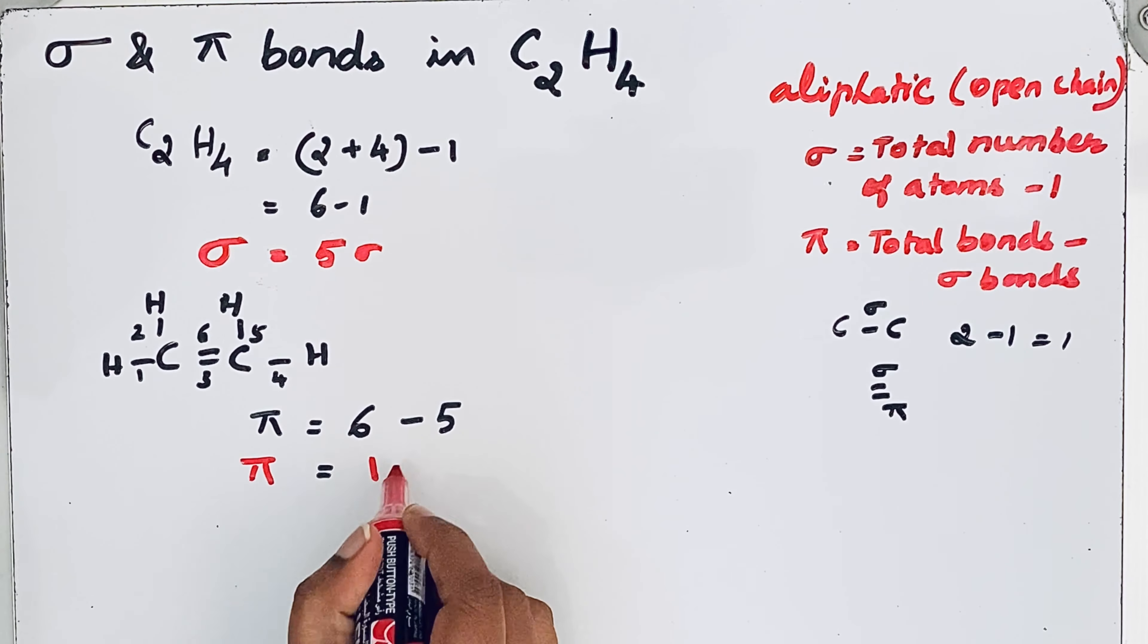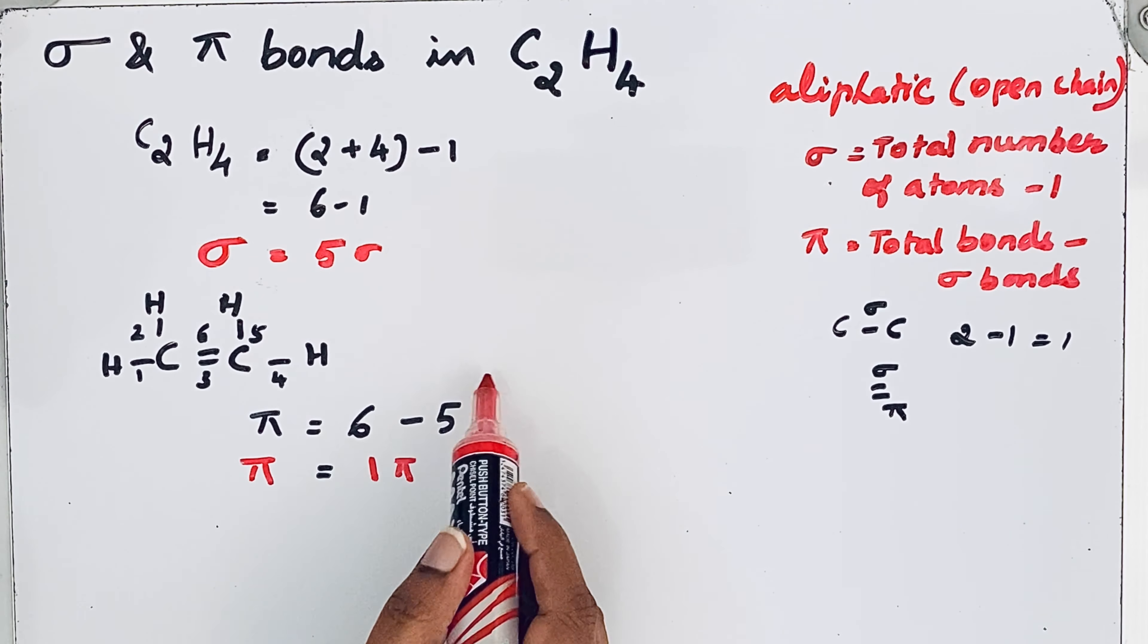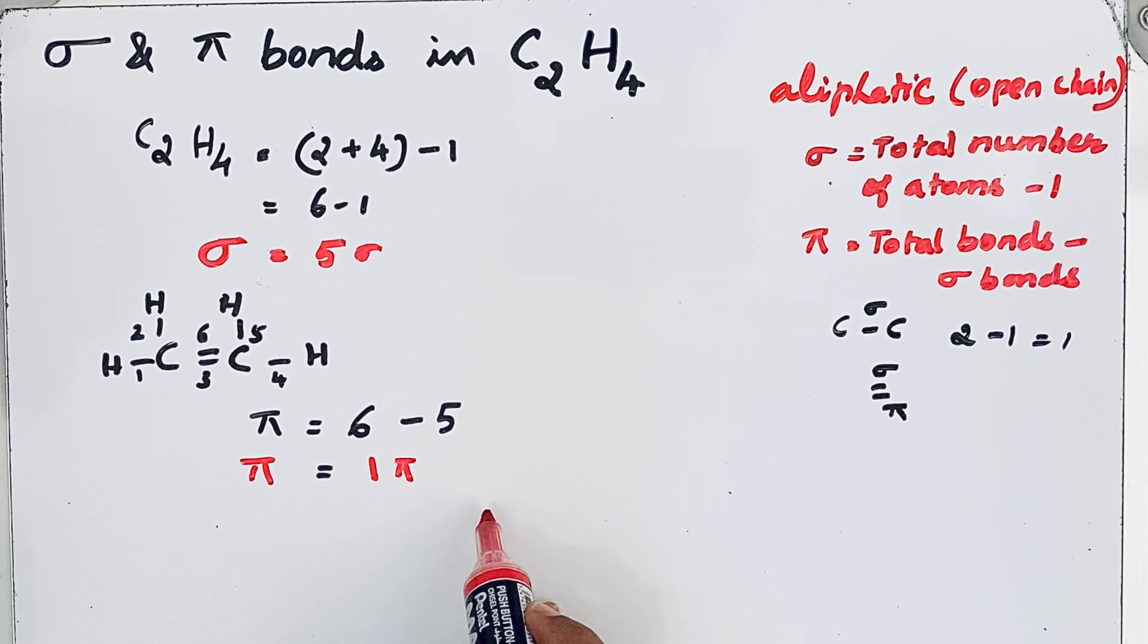So we have only one pi bond. In C2H4 we have 5 sigma bonds and 1 pi bond.